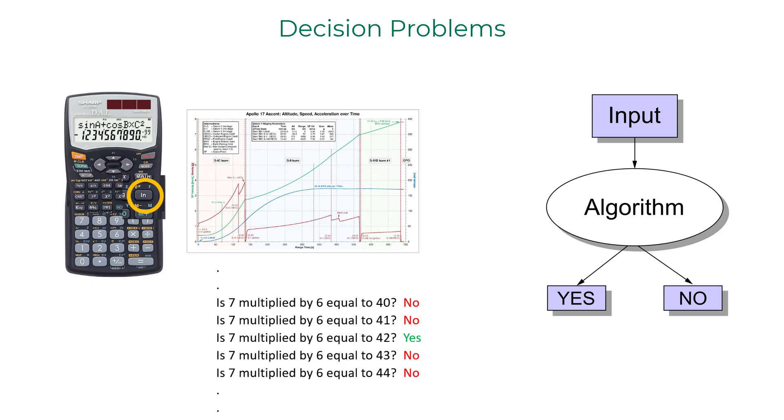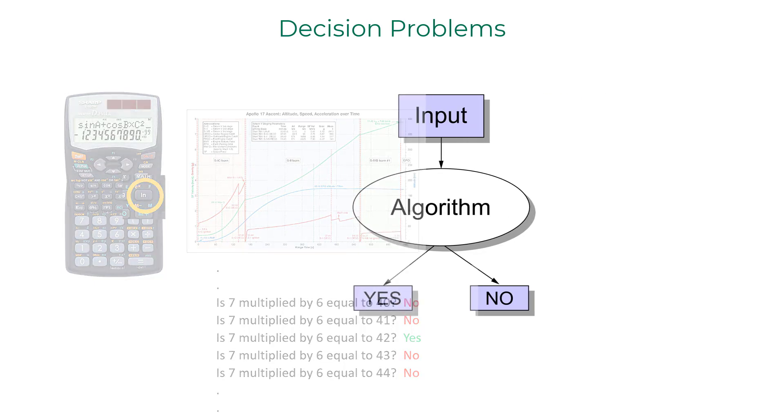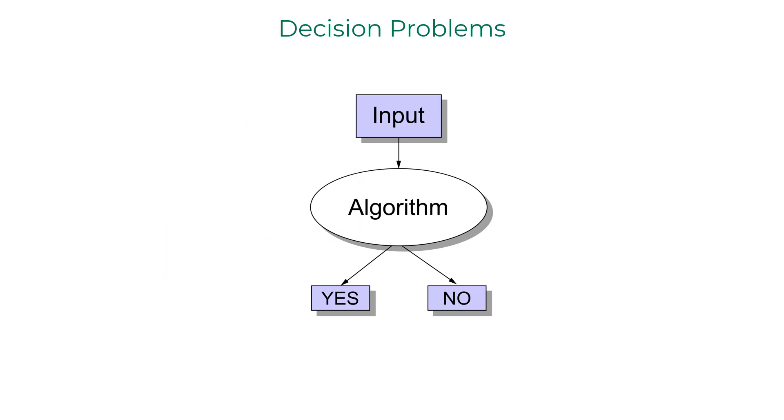Formally, a decision problem is a yes or no question on an infinite set of inputs. As we established earlier that Turing machines are as powerful as any computational model out there, we can use Turing machines to determine the decidability of a given decision problem.